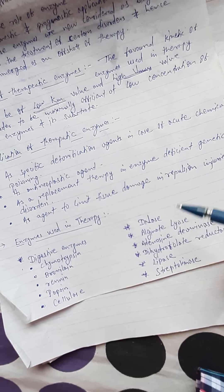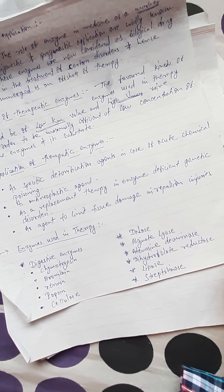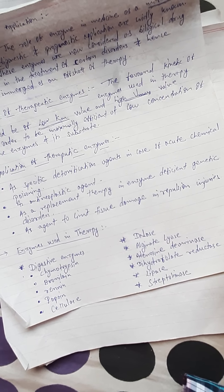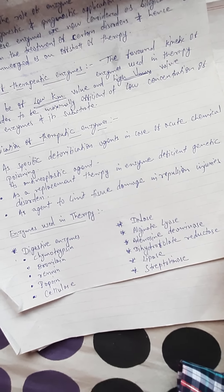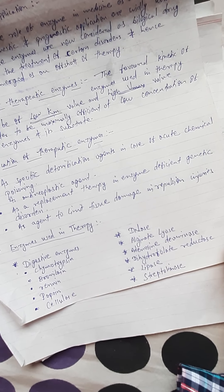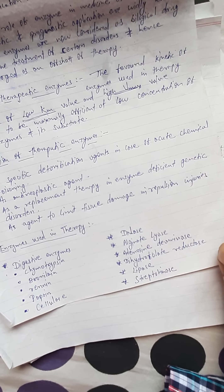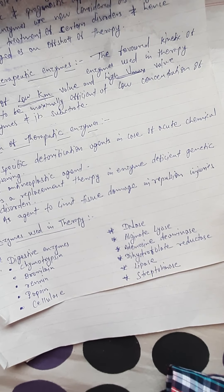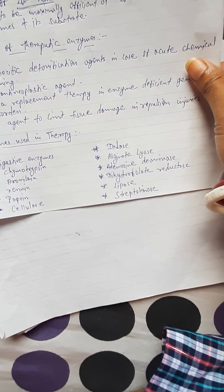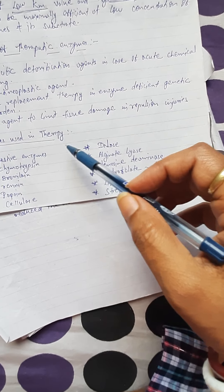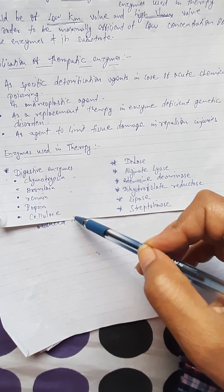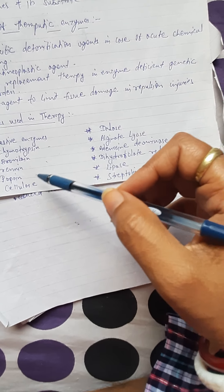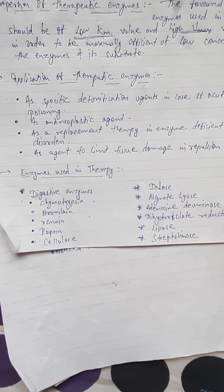As a replacement therapy in enzyme-deficient genetic disorders, enzymes are used as agents to limit tissue damage in reperfusion injuries. Many enzymes are also used in gene therapy. Examples include digestive enzymes, chymotrypsin, renin, propane, cellulase, DNase, alginate, adenosine, and streptokinase — all used in enzyme therapy applications.